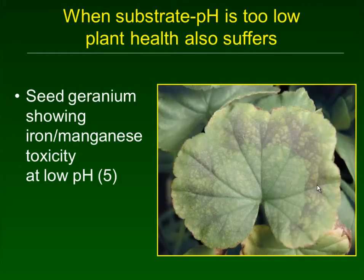Similarly, when substrate pH becomes too low there are plant health problems as well. The seed geranium is showing symptoms of iron manganese toxicity at a low pH of 5.